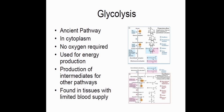Glycolysis — the EMP pathway — occurs in the cytoplasm and generally does not require oxygen. It is considered an aerobic pathway in the sense that it continues regardless of whether oxygen is present or not. After pyruvate is produced, the presence or absence of oxygen determines the next route. Glycolysis is used for energy production, for generating intermediates for other pathways, and is found in tissues with limited blood supply.